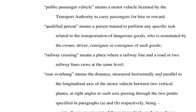We'll continue looking at the definition of terms in the Road Traffic Regulations 2022. Public passenger vehicle means a motor vehicle licensed by the transport authority to carry passengers for hire or reward. Qualified person means a person trained to perform any specific task related to the transportation of dangerous goods who is nominated by the owner, driver, consigner, or consignee of such goods.